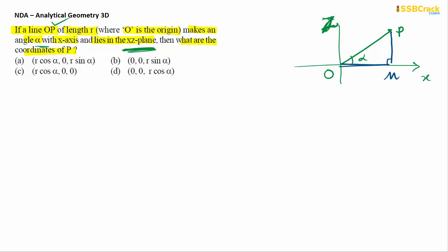Since it lies in the x-z plane, this is the x-axis and this is the z-axis. From origin O to P, we draw a vector making angle α with the x-axis. If we draw a perpendicular from P to the x-axis, calling it PM, then OM is adjacent to angle α and PM is opposite to angle α. Using trigonometric concepts, the length OM will be R cos α and PM will be R sin α.